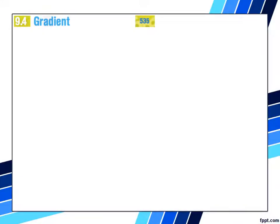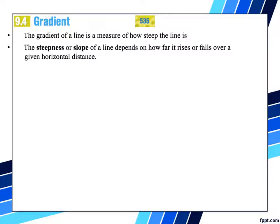Good morning, we are doing 9.4 gradient, page 535 of your textbook. This is a very interesting and important topic, so please listen very carefully. Gradient, the other word for gradient is slope or steepness. The gradient of a line is a measure of how steep the line is. The steepness or slope of a line depends on how far it rises or falls over a given horizontal distance.